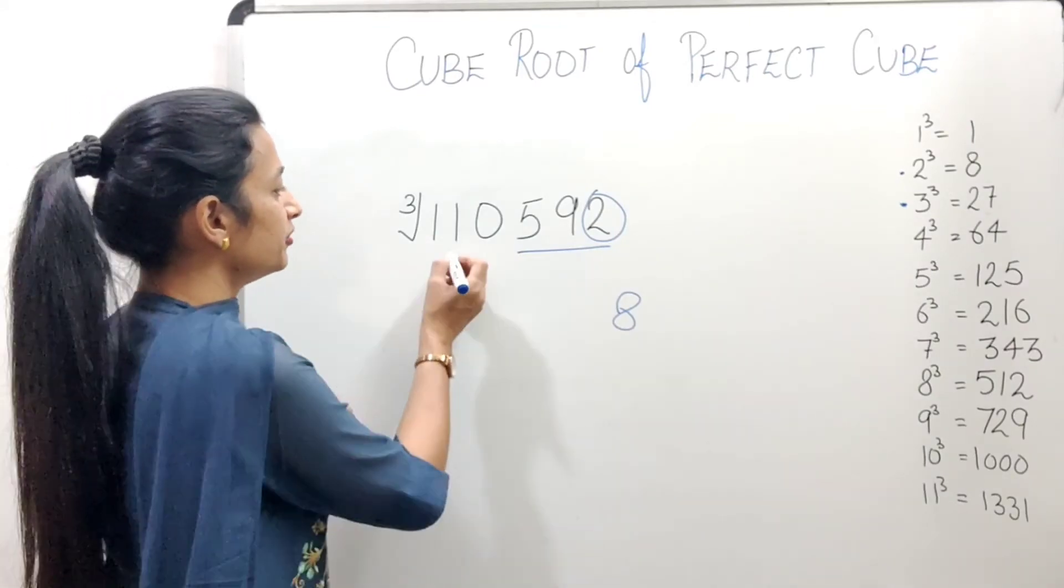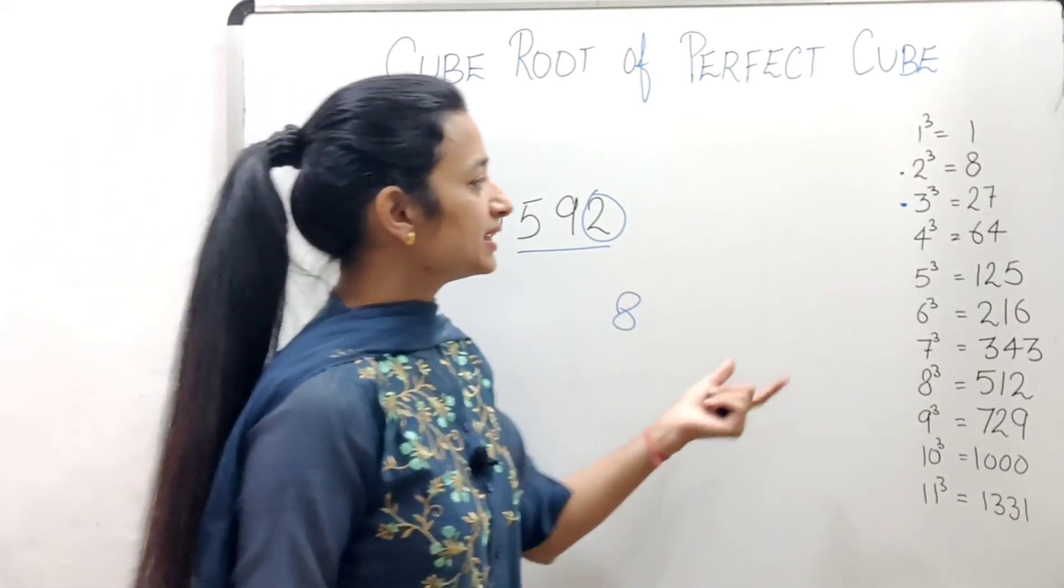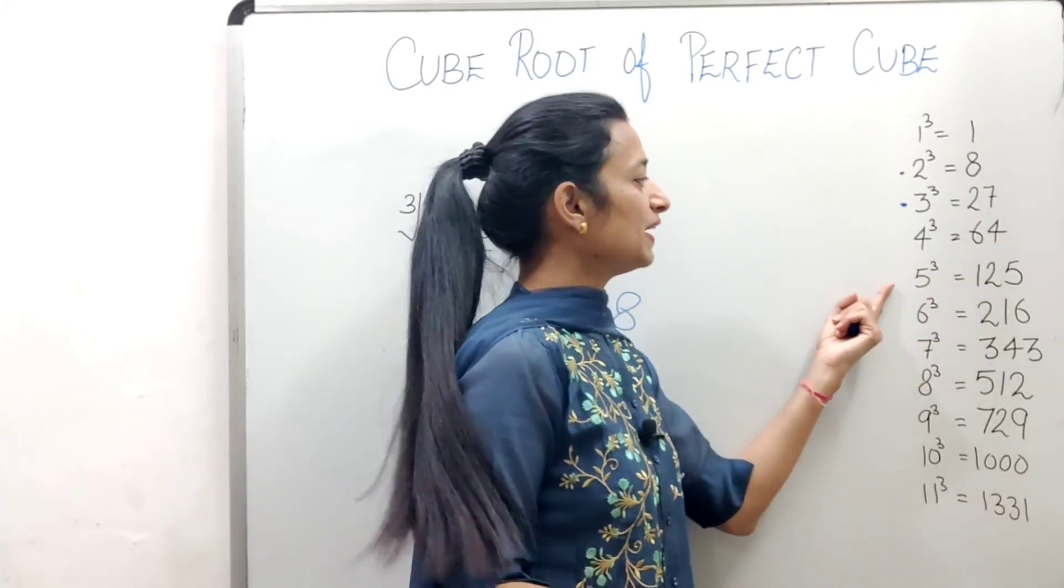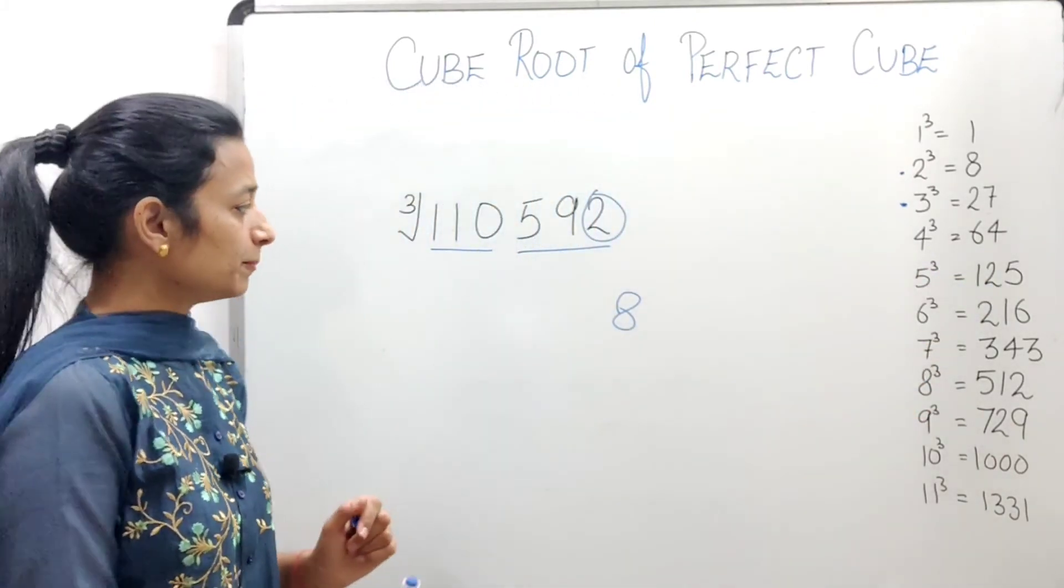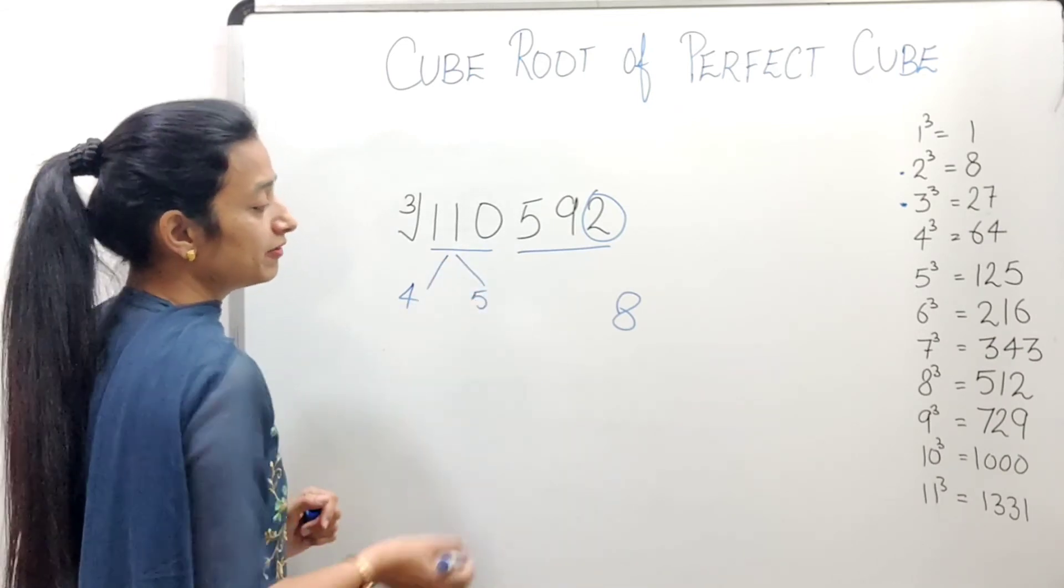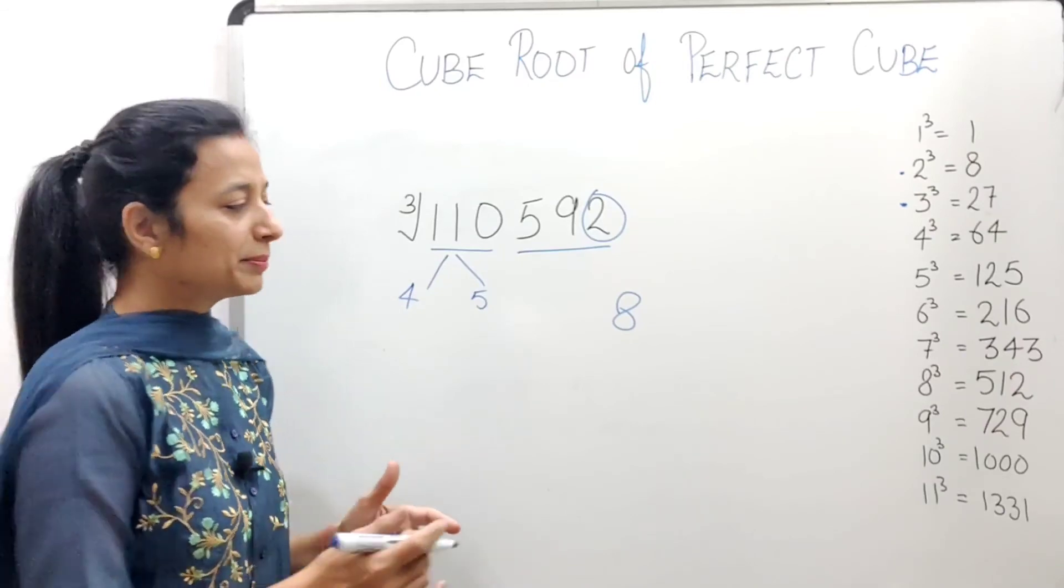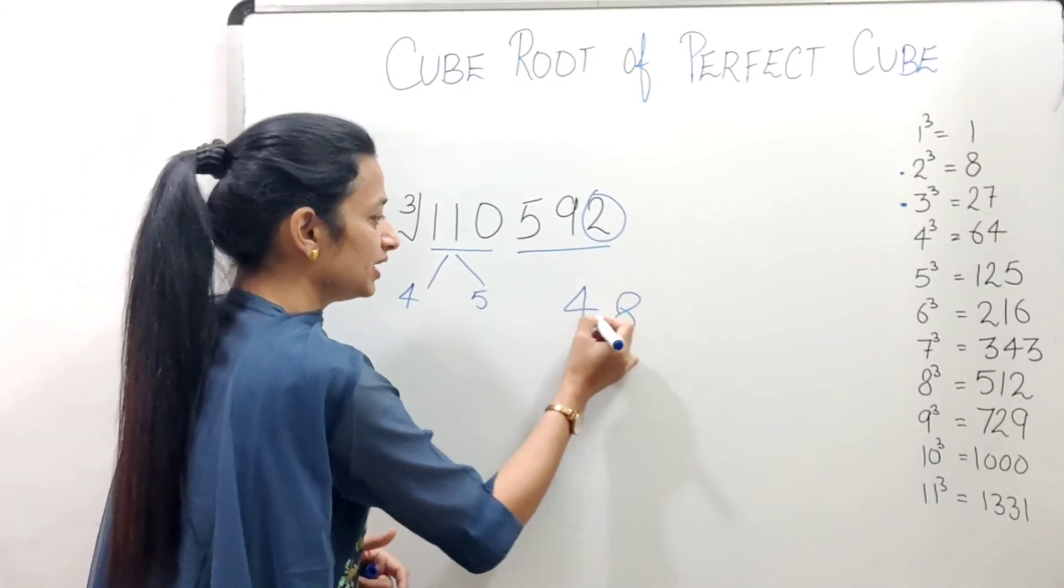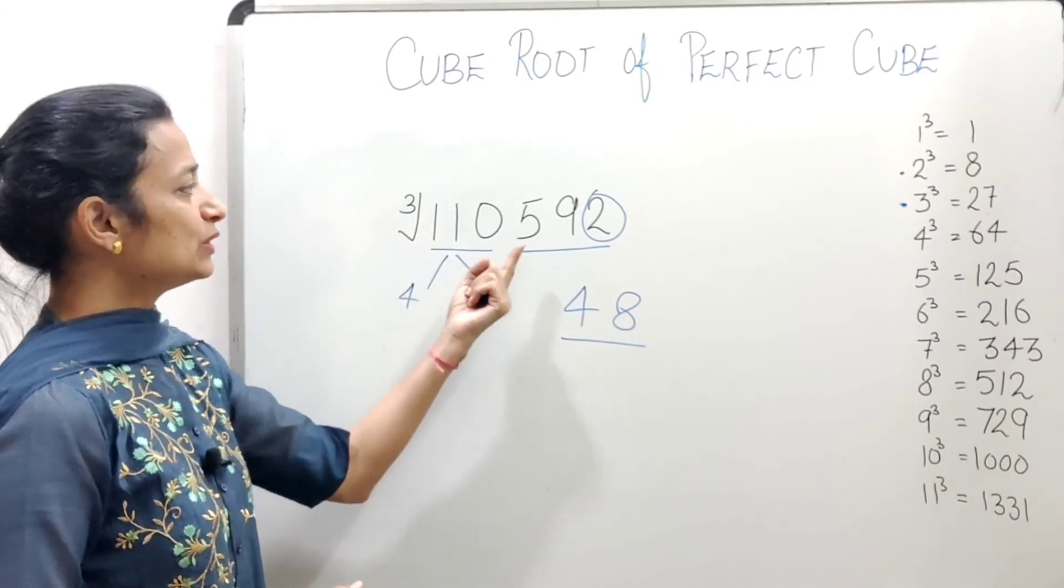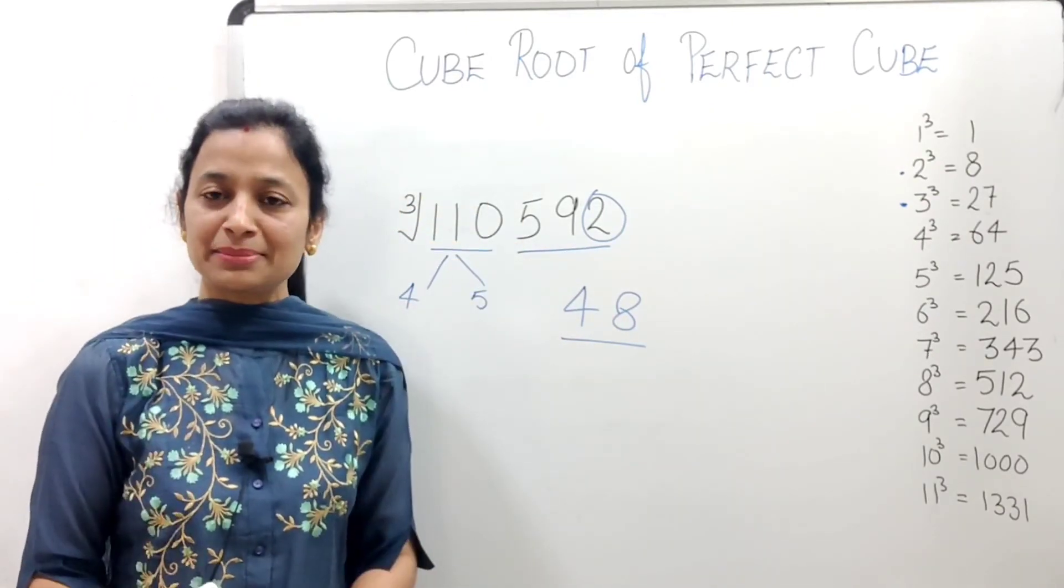Now we will look at 110. 110 will come between whose cubes? Look, between 4 and 5. 4 cubed is 64, and 5 cubed is 125. So between which will it come? Between 4 and 5. And from these two, which number do we have to take? The smaller number. So 48 is the cube root of 110592.